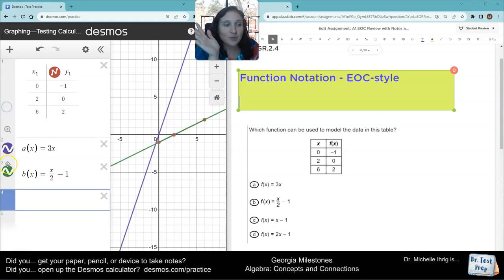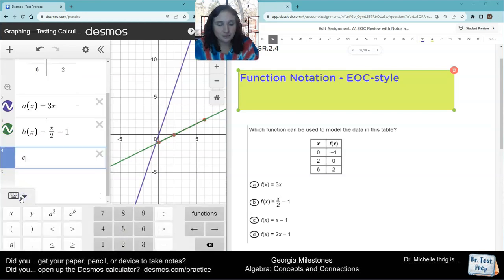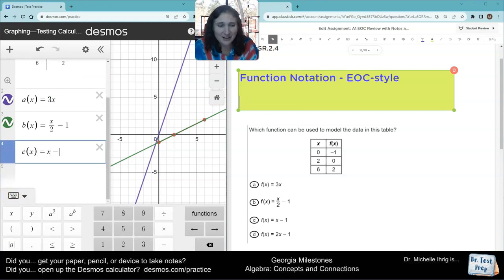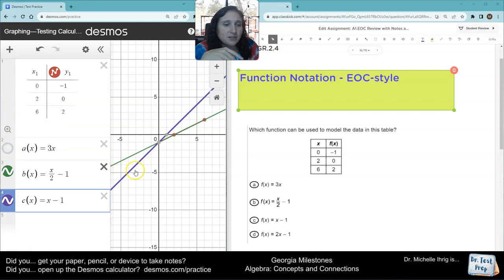But let's just make sure. Okay? Let's type in C of X. And again, you can write it as F of X. Again, it doesn't matter. I like writing it just because I want to... Let's turn off this graph.